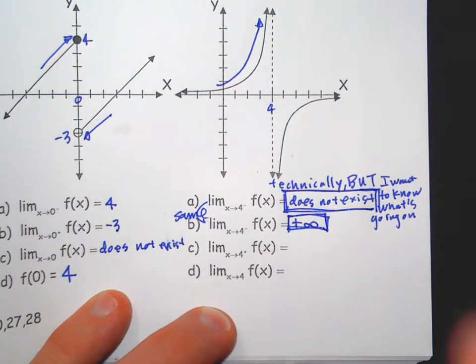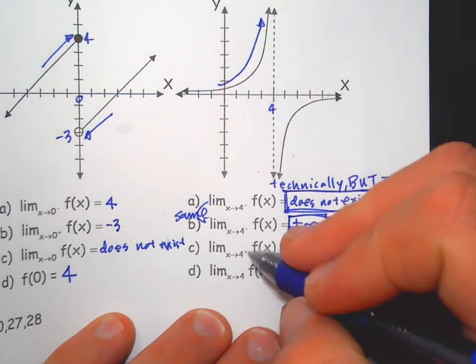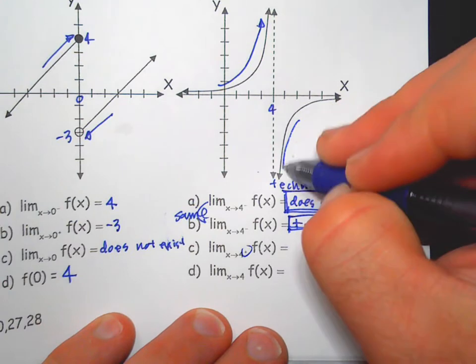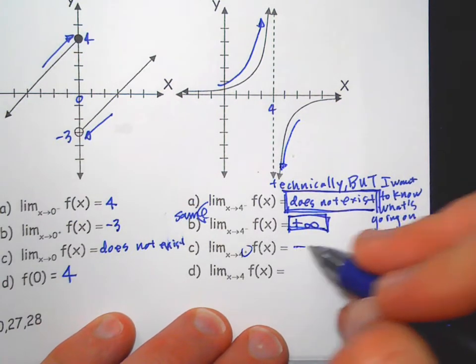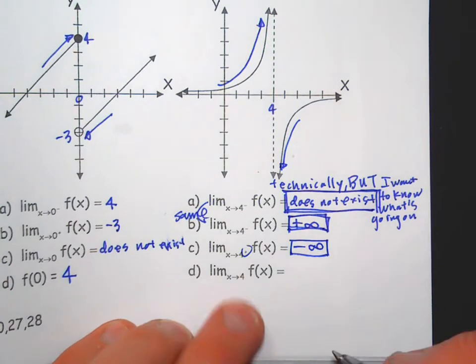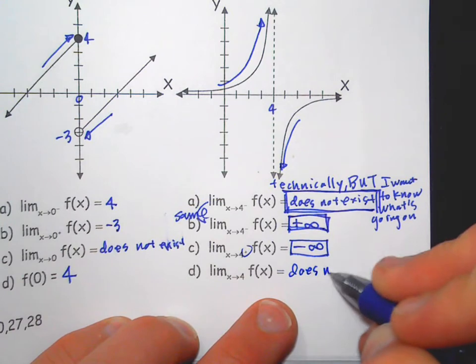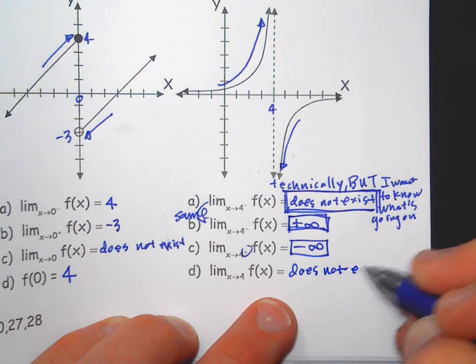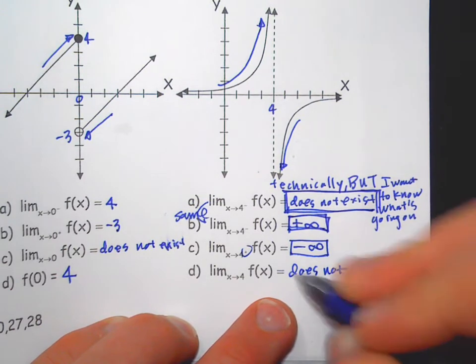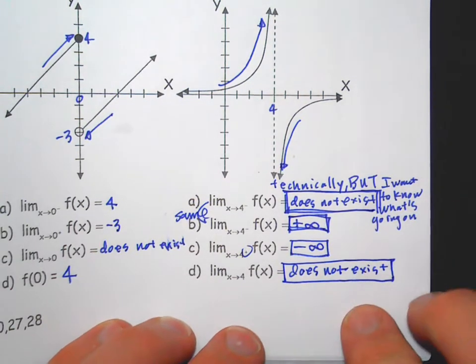As we approach 4 from the right side, the graph goes to negative infinity—technically does not exist. Now as we approach 4, we're going to say does not exist. Even if both sides go to infinity, we're going to say does not exist. So the only time we put infinity, positive or negative, is for one-sided limits.